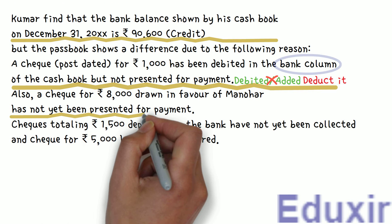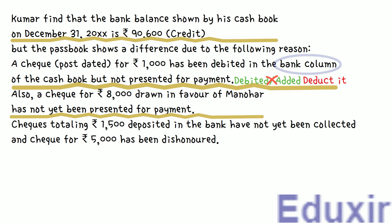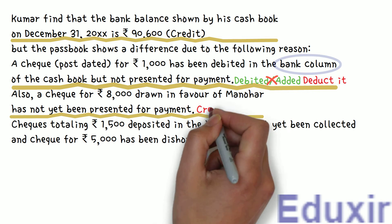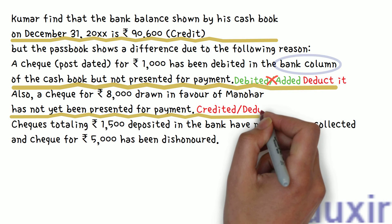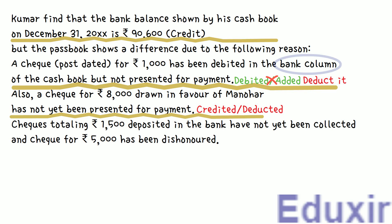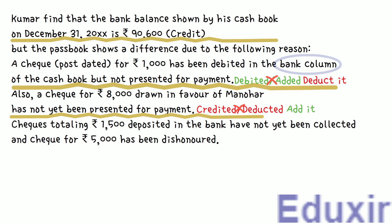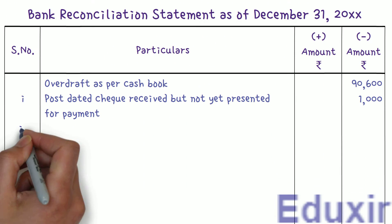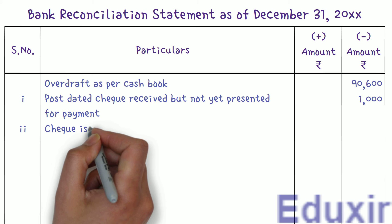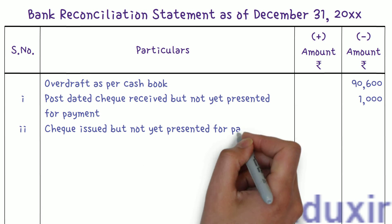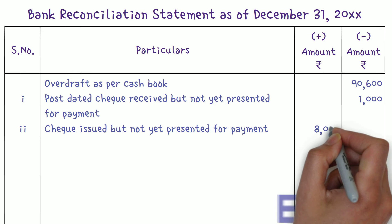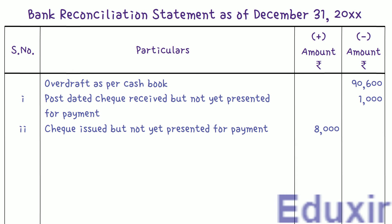Here it is given that the business has issued a check to Manohar, but the check was not yet presented for payment. When the business issues a check, it is credited in the cashbook. However, as this check is not yet presented for payment, there won't be any corresponding entry on the debit side of the passbook. So we need to add this amount to the cashbook balance to get the passbook balance. We write the particulars as 'Check issued but not yet presented for payment' and enter Rs. 8,000 in the plus amount column.